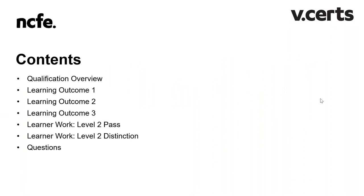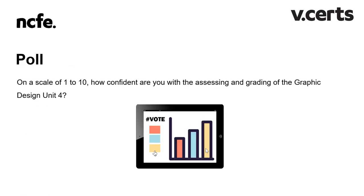The plan for today's webinar is to give you an overview of this qualification, provide a summary of the learning outcomes and grading descriptors for Unit 4, then look at a Level 2 pass piece of work, a Level 2 distinction piece of work, and finally to address any questions you may have. But first I'd like to do a quick poll on how confident you're currently feeling with the marking and grading of the Unit 4 work.